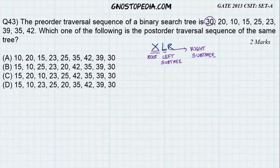Now, how do you know what is the left subtree and the right subtree? In a binary search tree, the left subtree is always less than the root. For example, here the root is 30, hence the numbers 20, 10, 15, 25, 23 will always be in the left subtree because it is less than 30.